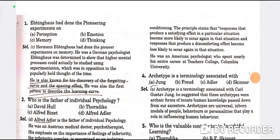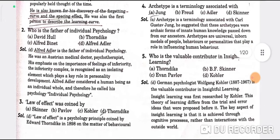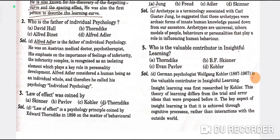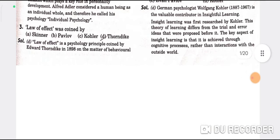Ebbinghaus had done the pioneering experiments on memory — correct option is C. He discovered the forgetting curve, the spacing effect, and was the first person to describe the learning curve. Question 2: Who is the father of individual psychology? Alfred Adler — D is the correct option. Question 3: Law of effect was coined by Thorndike — D is the correct option.